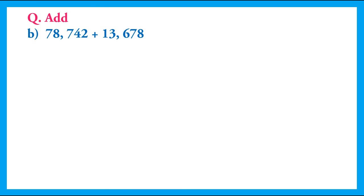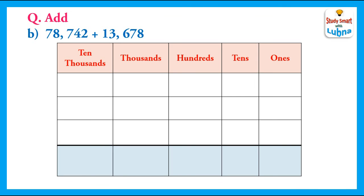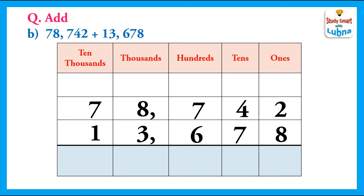Another question: here we have to add seventy-eight thousand seven hundred and forty-two and thirteen thousand six hundred and seventy-eight. We write these numbers below the place values one by one and put the addition symbol. First of all, we will add the ones: two plus eight equals ten. So we regroup — ten ones equals one ten and zero ones — so we put zero in the ones column and put one carry in the tens column.